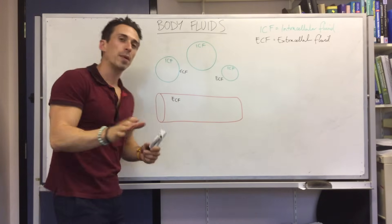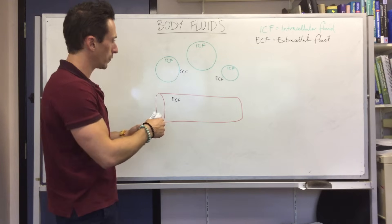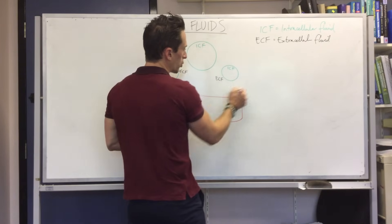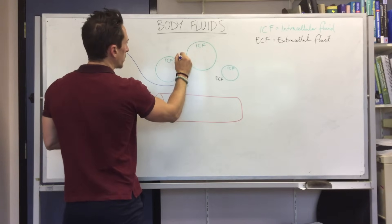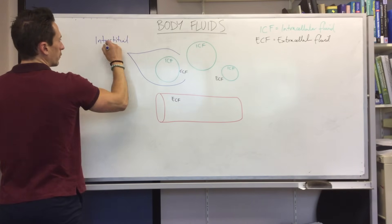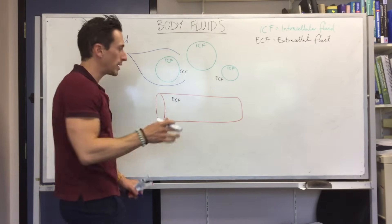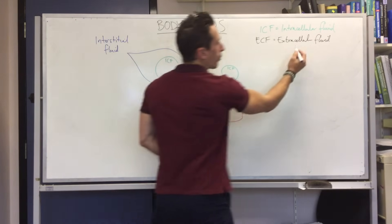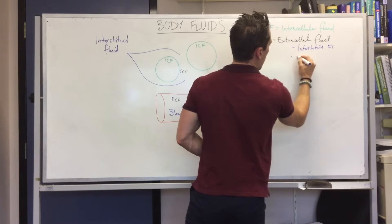Extracellular fluid is broken into two sub-compartments. The fluid between the cells is called interstitial fluid, and the fluid that sits within a blood vessel is called blood plasma.